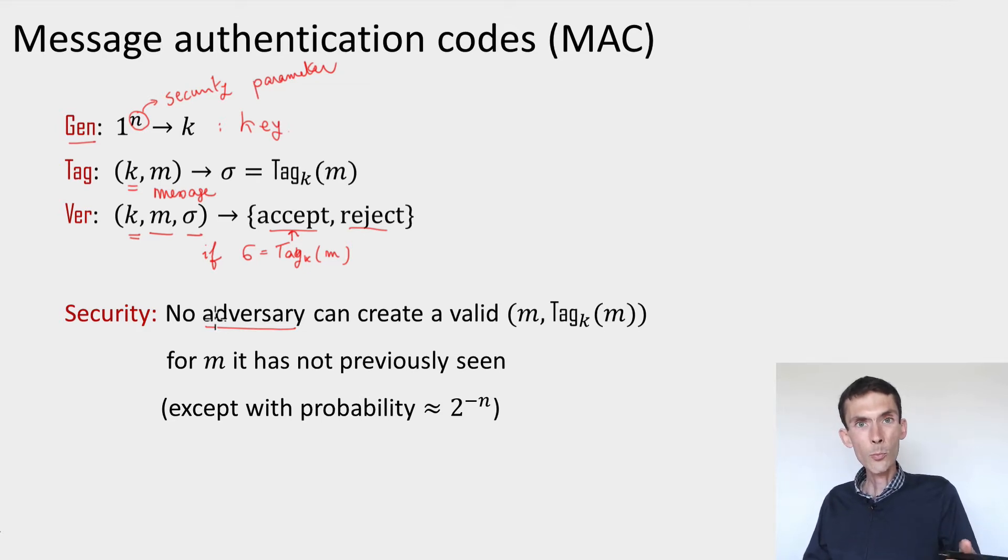But we'll say that the MAC is secure even though the adversary has seen all these message tag pairs, it is not able to come up with a new message that it hasn't seen so far, let's call it m prime, and a tag sigma prime for that message that will be accepted by the verification procedure. So that's security of a MAC. Given many message tag pairs, you are not able to come up with a new message and a valid tag for that message.